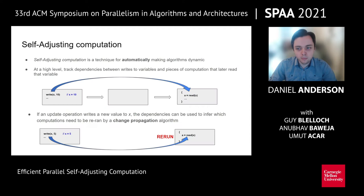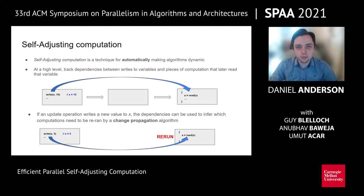One approach to overcome this is a technique called self-adjusting computation, which allows us to automatically transform static algorithms into dynamic algorithms. At a high level, the idea is to track dependencies between writes to variables and pieces of computation that read those variables. If an update changes the value of some variable, the dependencies can be used to figure out which parts of the computation are out of date and need to be re-run, using what we call a change propagation algorithm.